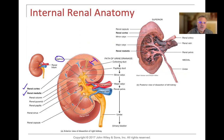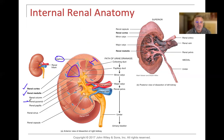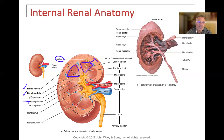The renal medulla, because of this triangular shape, is sometimes referred to as the renal pyramid. Between each renal pyramid, we are going to find the renal columns.